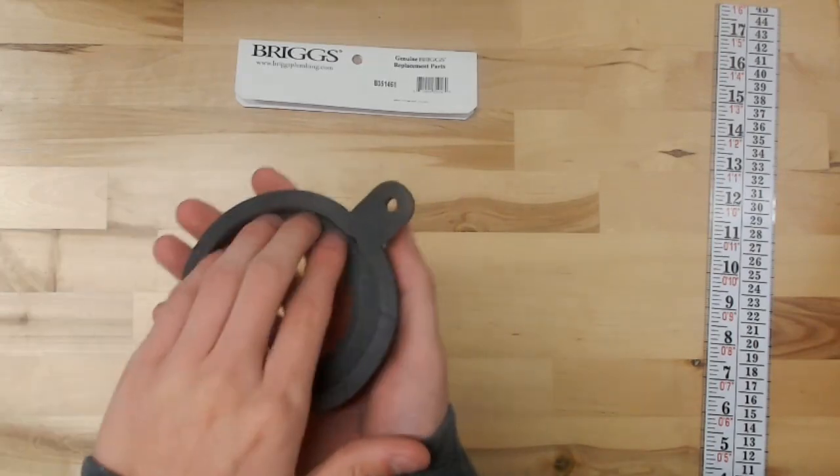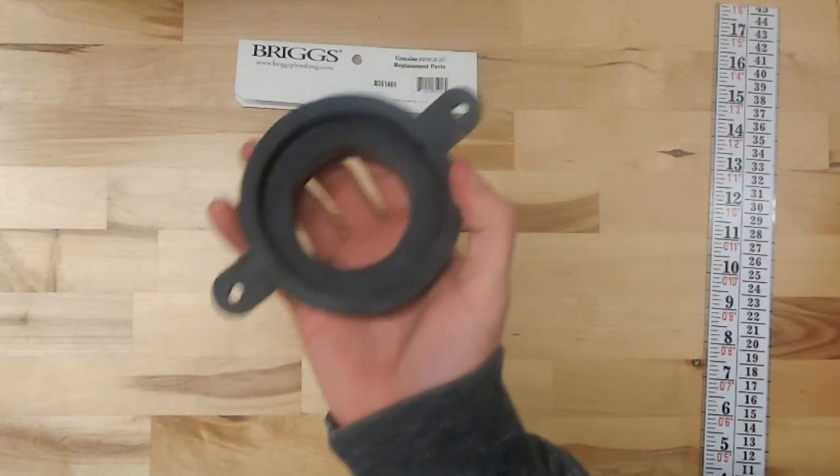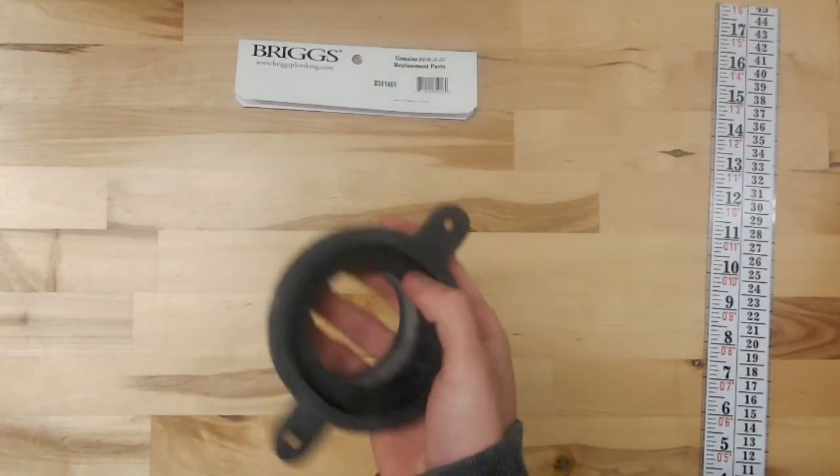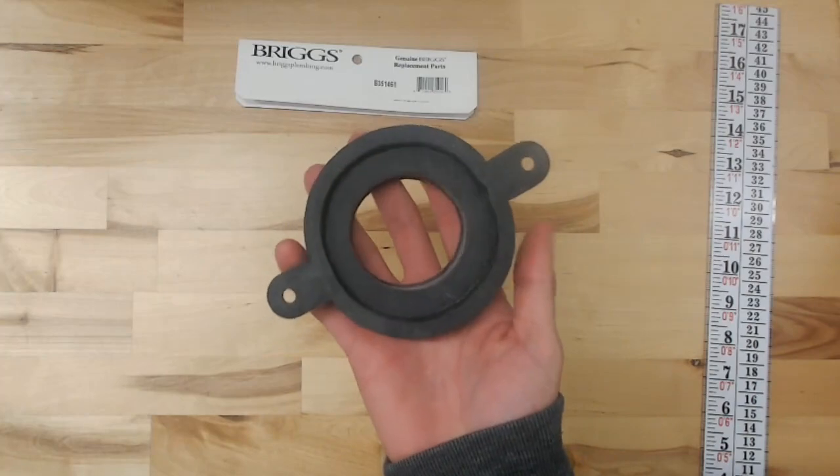That's where the flush valve nut would sit. So yours may have a hex pattern here. It's from the flush valve being pressed against it for so long.